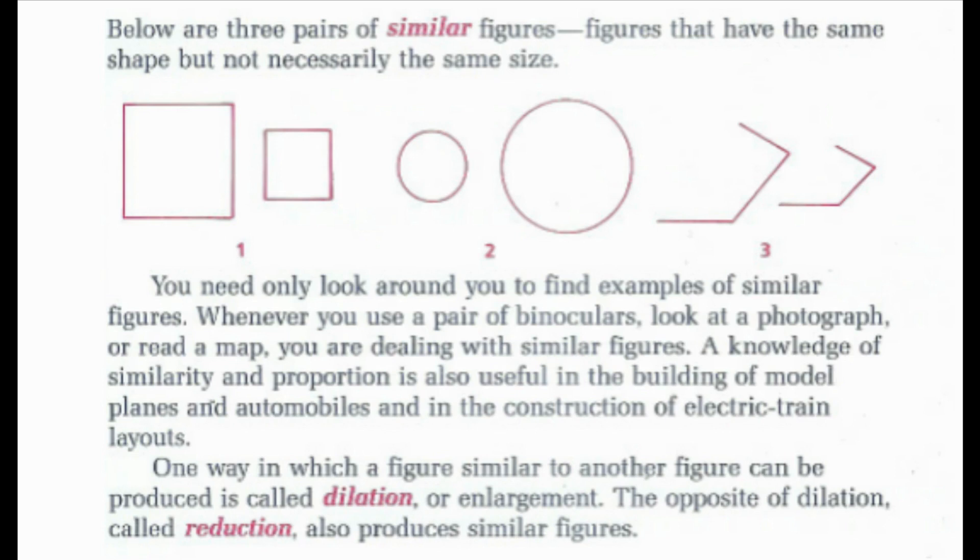The way in which a figure similar to another figure can be produced is called a dilation, or an enlargement, and then the opposite of a dilation, called a reduction, also produces similar figures.